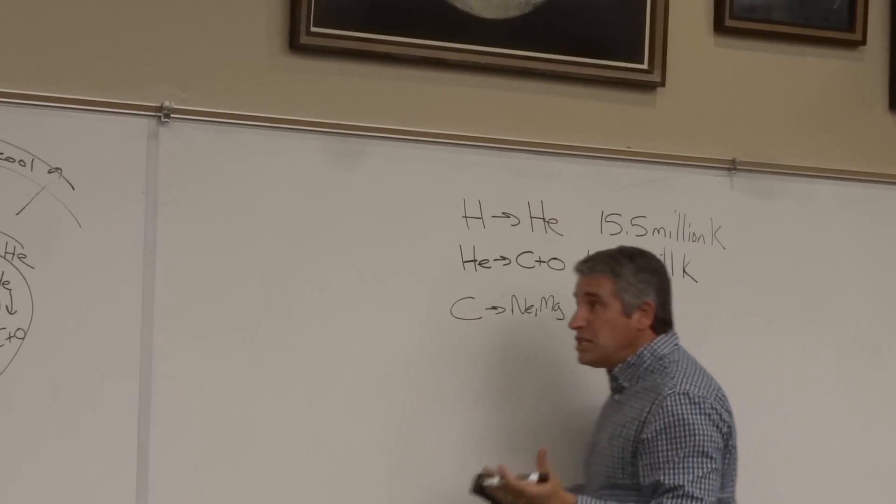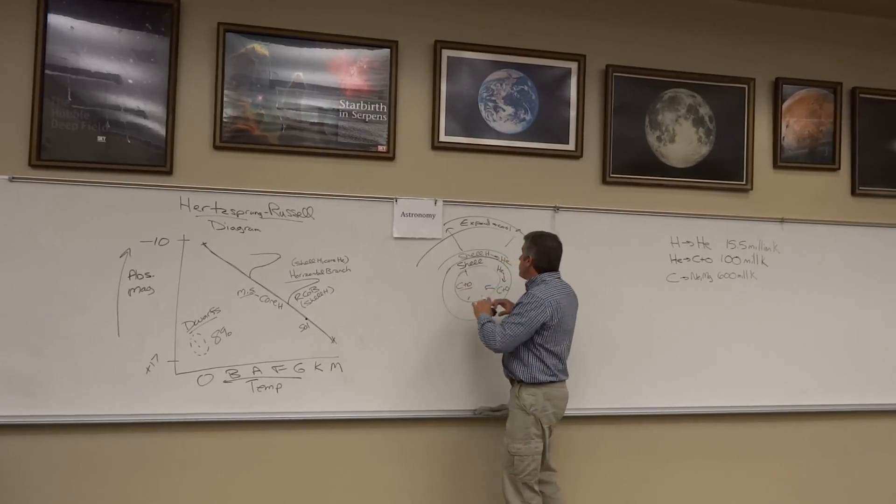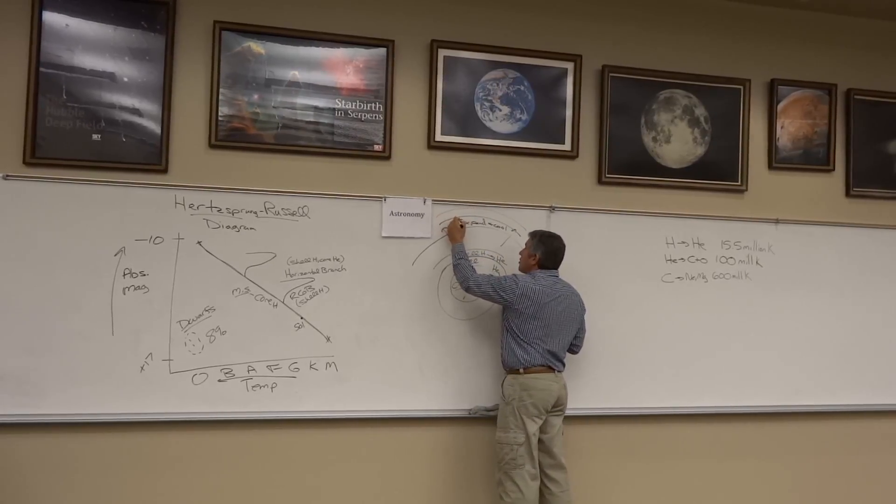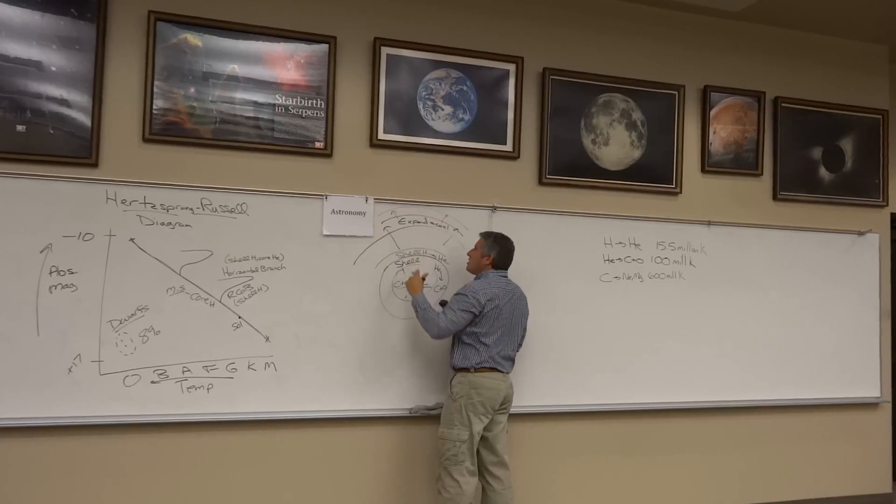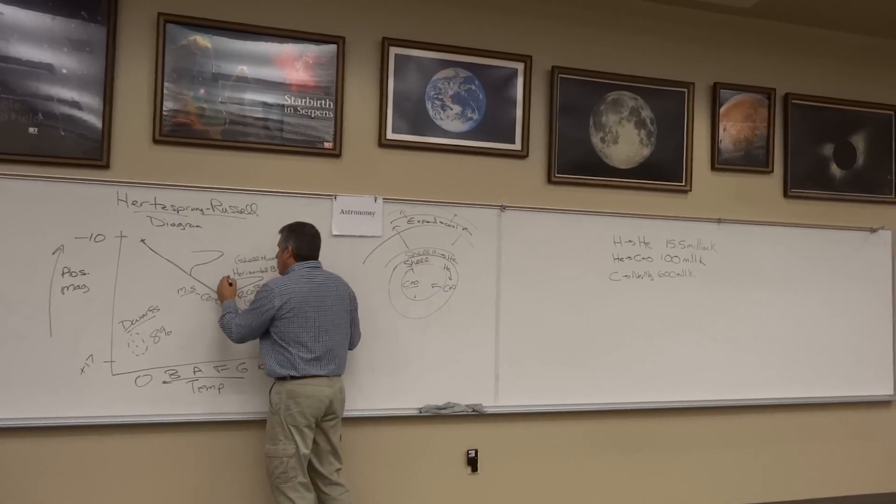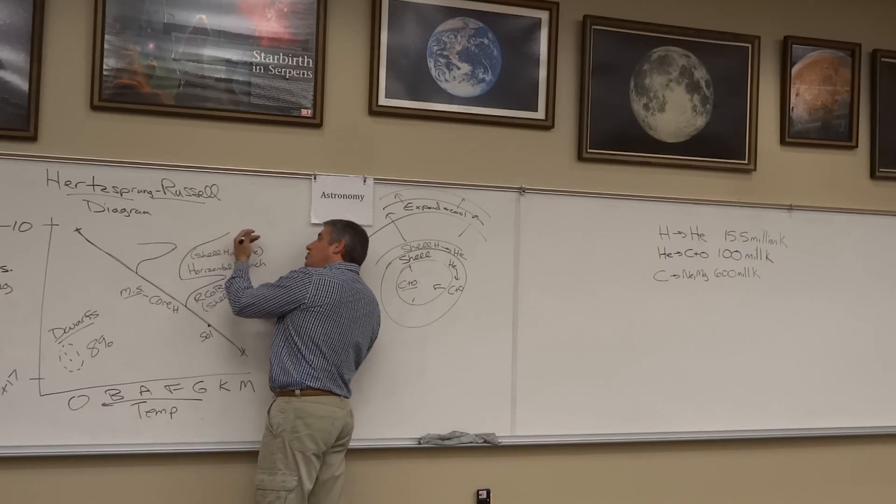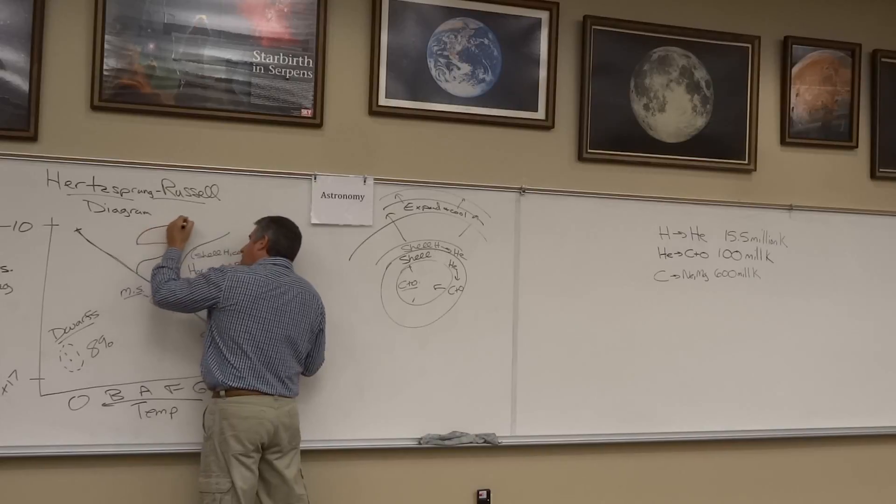But before it reaches that, these two shells create a situation where the star is now pushing more and more energy through the outer layers. And once again the star expands and cools. So once again the star moves up because it's brighter and to the right. Up and to the right.